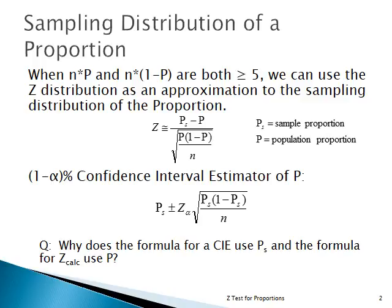Now let's look at the formula for a confidence interval estimator of P with confidence level 1 minus alpha — maybe 90% or 95%. The sample statistic is in the middle of the interval; that's the sample proportion P-sub-s, plus and minus the half-width of the confidence interval. That's our interval estimator for the population proportion P.